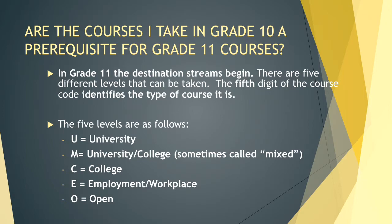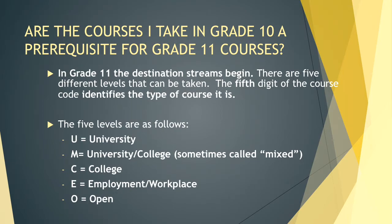Are the courses I take in grade 10 a prerequisite for grade 11 courses? In grade 11, the destination streams begin — you will no longer have academic and applied. Instead, there are five different levels: the fifth digit of the course code identifies the type. For example, ENG3U1 — the U identifies it as a university preparation course. M means university or college, sometimes called mixed. C stands for college destination. E is for employment and workplace. And in grade 11, you will still see some open courses.